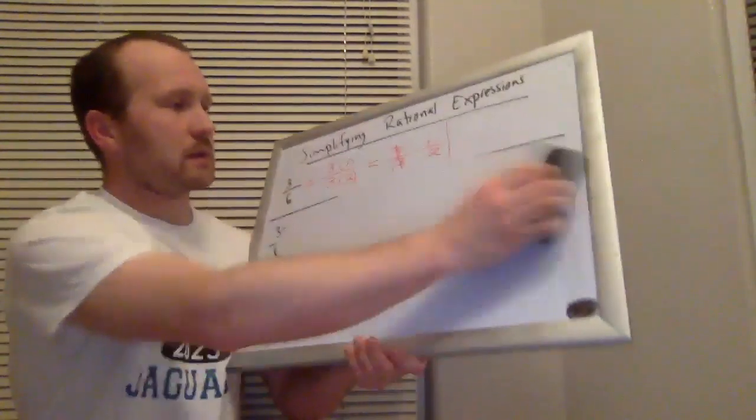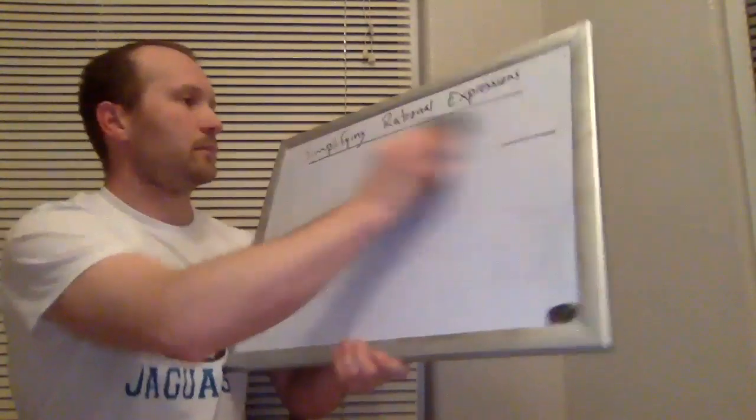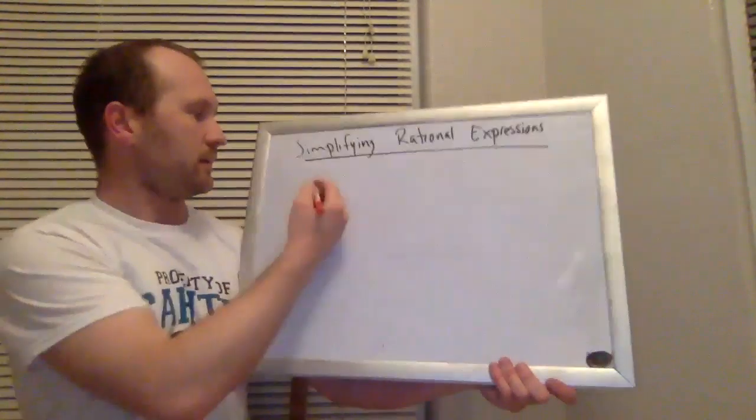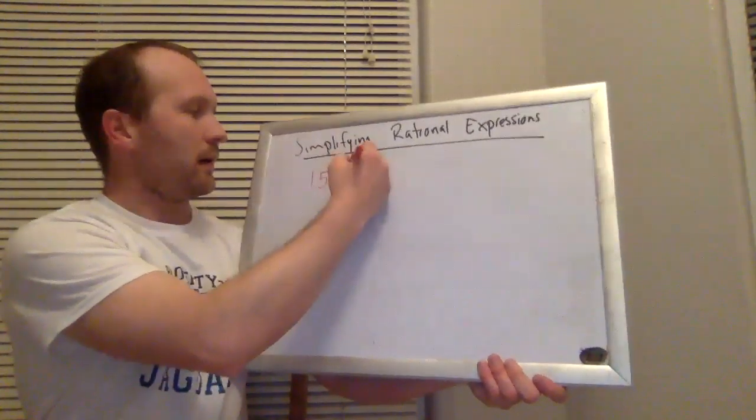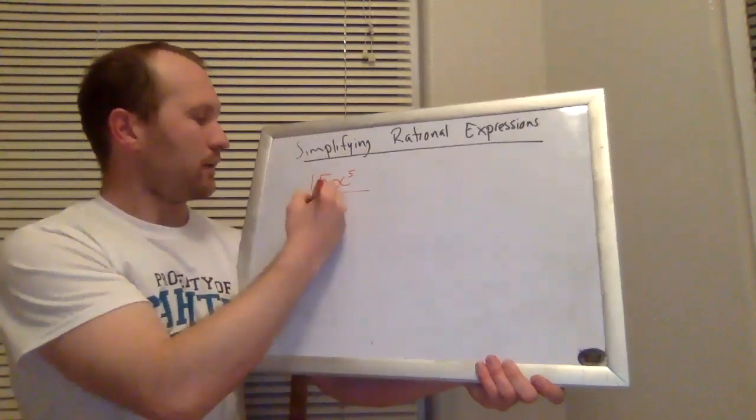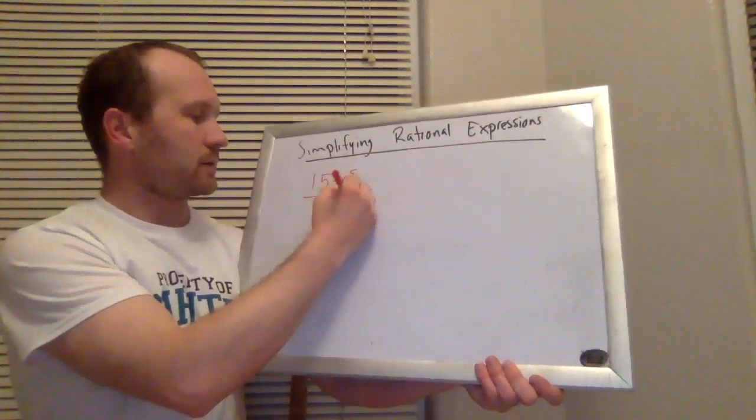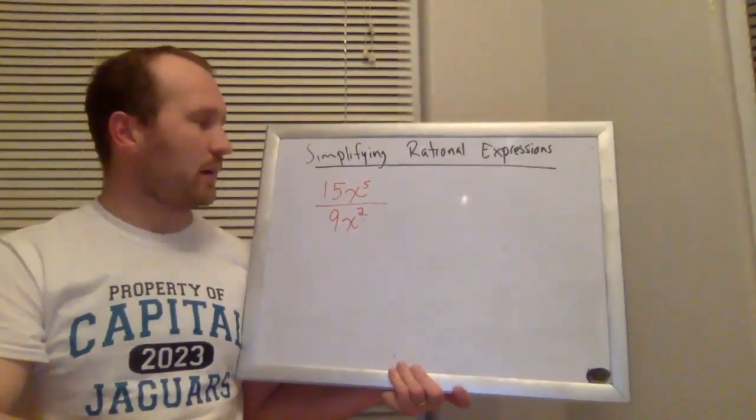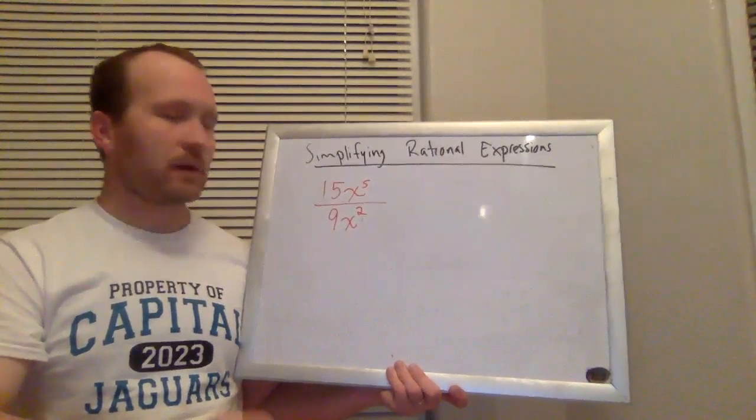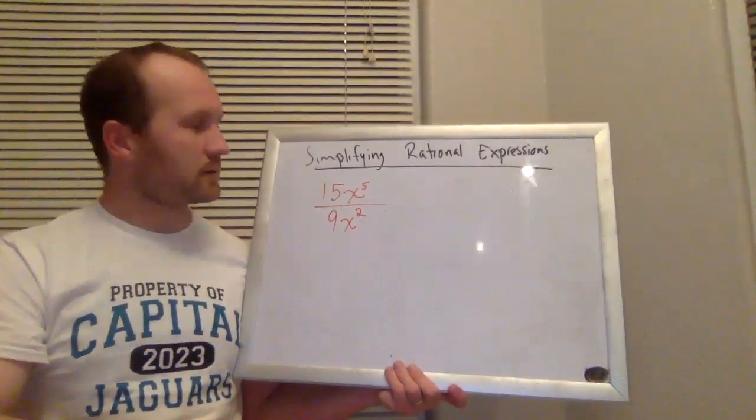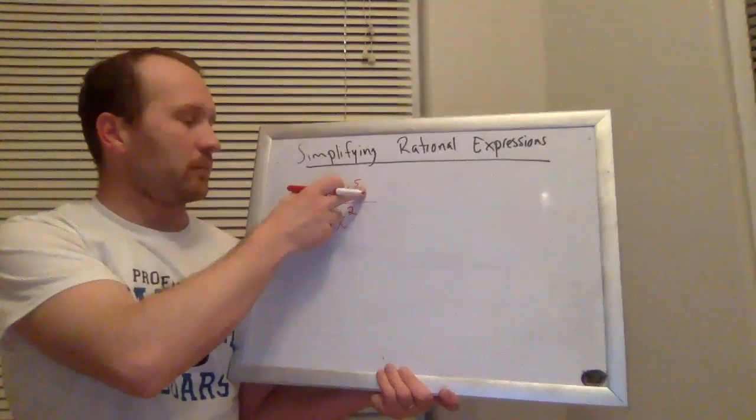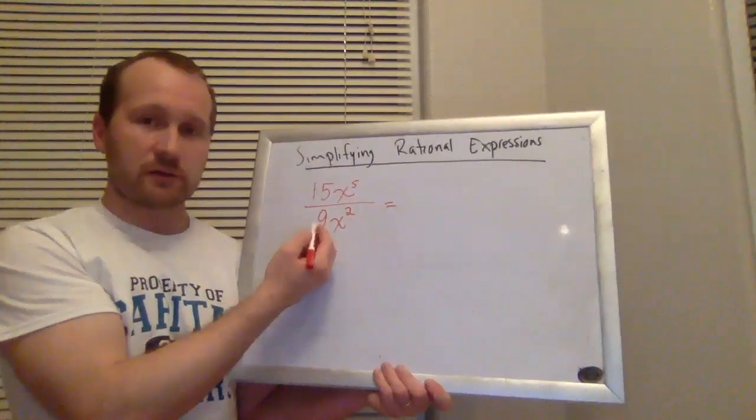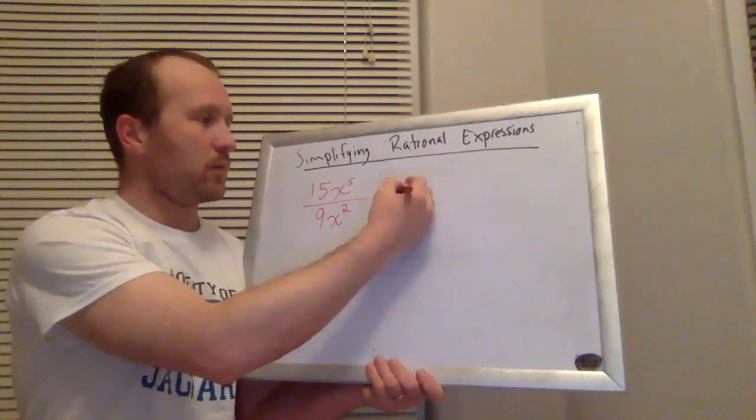Let's do a couple other examples like that. So let's say I had a problem like this. 15x plus 15x to the fifth over 9x squared. I'm just looking for common factors top to bottom. So I'm going to look at numbers and variables separately in this case, because there's only one term. So 15 has the factors of 5 times 3. 9 has the factors of 3 times 3. So I know they both have a 3.